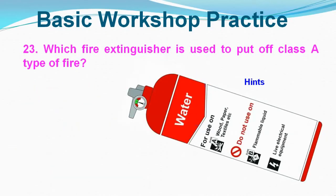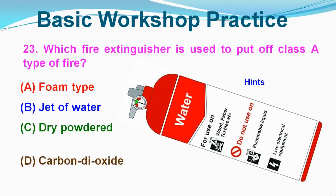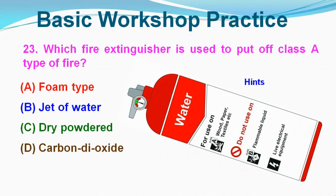Question No. 23: Which fire extinguisher is used to put off a Class A type of fire? Option A: Foam Type, Option B: Jet of Water, Option C: Dry Powder, Option D: Carbon Dioxide. Correct answer is Option B, Jet of Water.